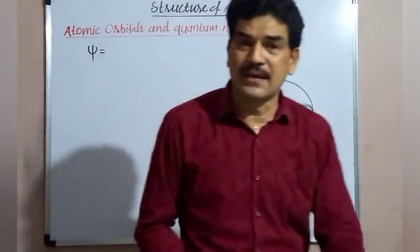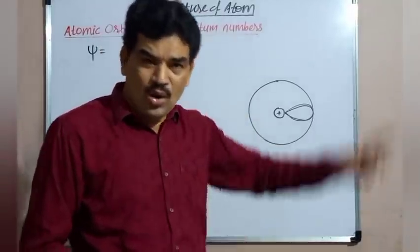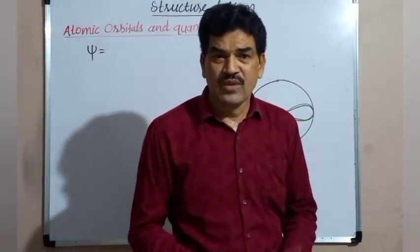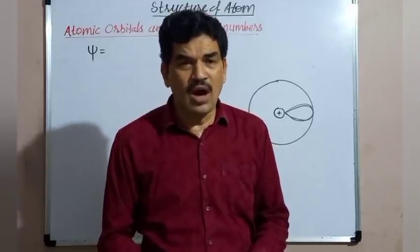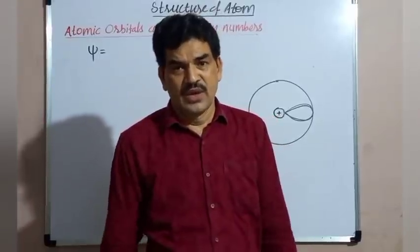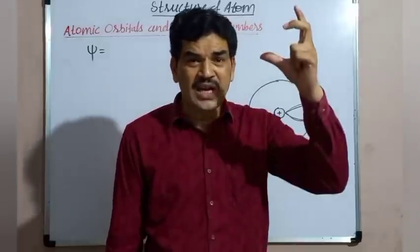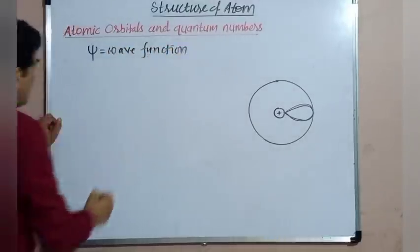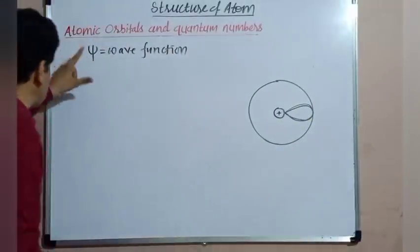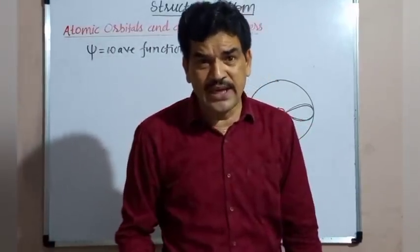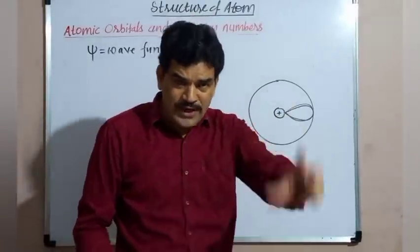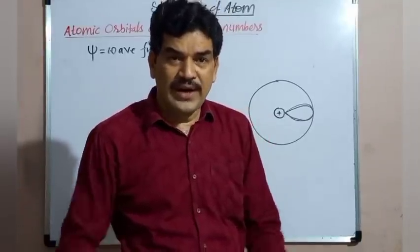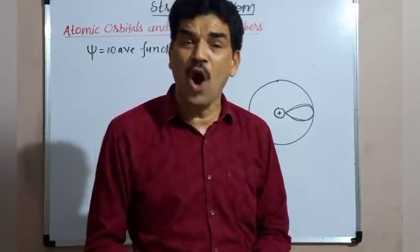In an atom, a number of atomic orbitals are possible. Various atomic orbitals are possible because when we solve the Schrödinger wave equation, we get the possible values of wave function psi. Corresponding to these possible values of psi, we get the number of atomic orbitals in an atom — different atomic orbitals which correspond to the values of psi.